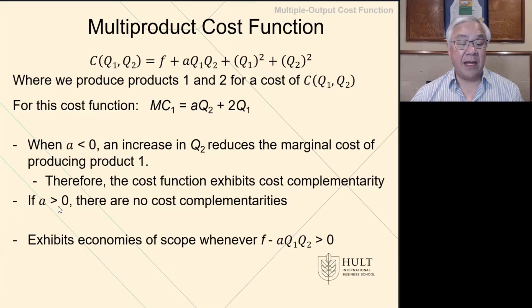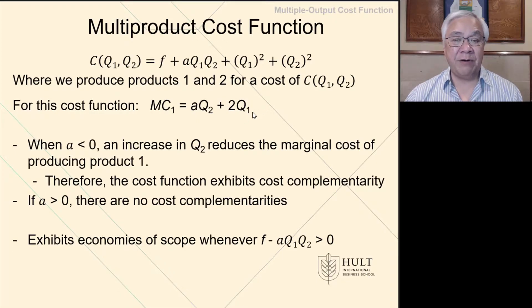And if A is greater than 0, then there's no cost complementarity. So if it's positive, then Q2 going up increases Q1. That doesn't really show any complementary characteristics between product 1 and product 2.